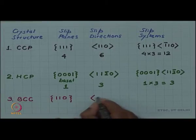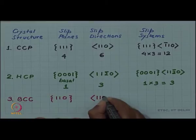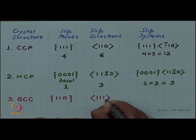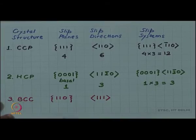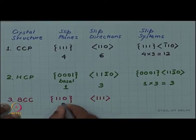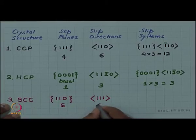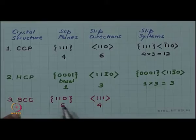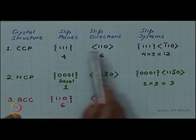But there are well defined close-pack direction that is the body diagonal. So it is <111>. So if you look at the numbers again this {110} comes out to 6 and this <111> comes out to be 4. You can see the situation is just reversed from that of CCP.